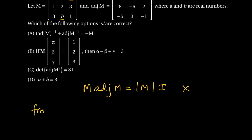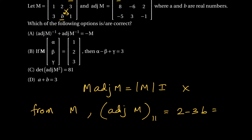From matrix M, I'm going to find adjoint of M, but only specific elements. For example, the (1,1) element — first row, first column — of adjoint of M is going to be 2 minus 3b. Since this is given as minus one, we get 3b equals 3, so b equals 1.